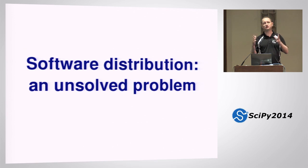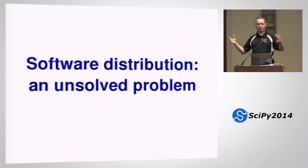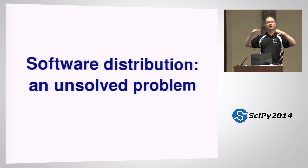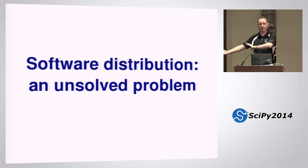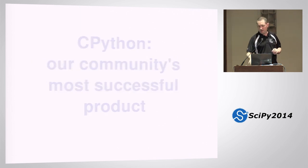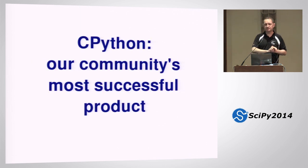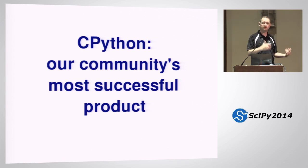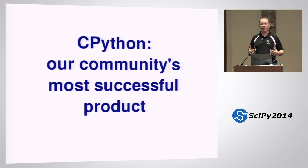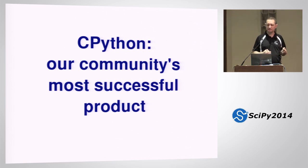The general case is extremely difficult to solve. And so what you end up with is redistributor networks where different redistributors serve different parts of the user base. And this is where we come back to CPython. CPython is what I consider the Python community's most successful product. The thing that makes me judge it that way is that users have a vast array of options for getting their hands on CPython, and they can get it in ways that are convenient for them.